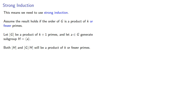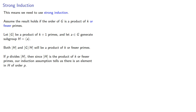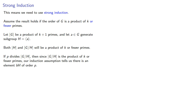Now if p divides the order of h, then since the order of h is the product of k or fewer primes, our induction assumption tells us that there is an element in h of order p. On the other hand, if p divides the order of g mod h, then since the order of g mod h is the product of k or fewer primes, our induction assumption tells us there is an element bH of order p. So there's some b not in h, where b to the power of p is an element of our subgroup h.